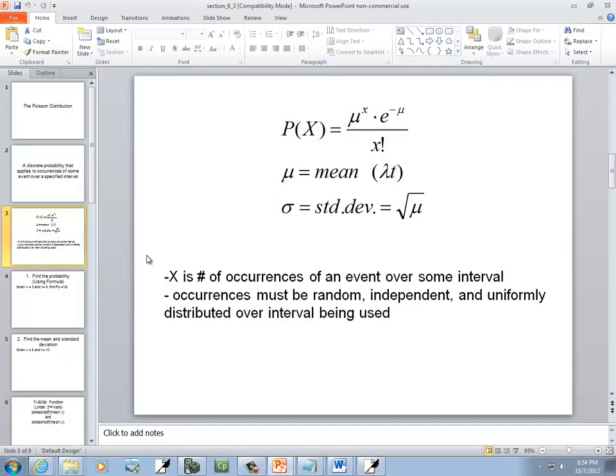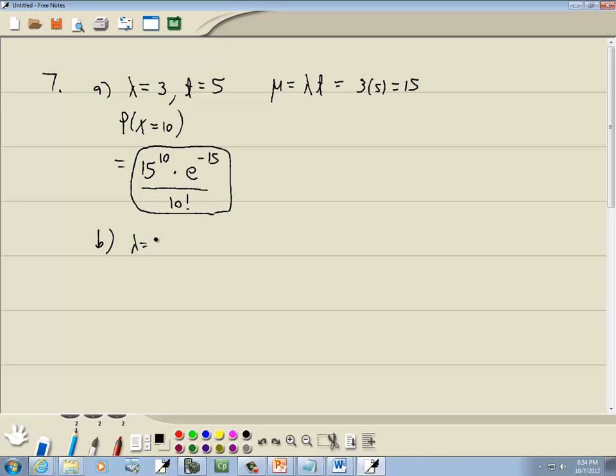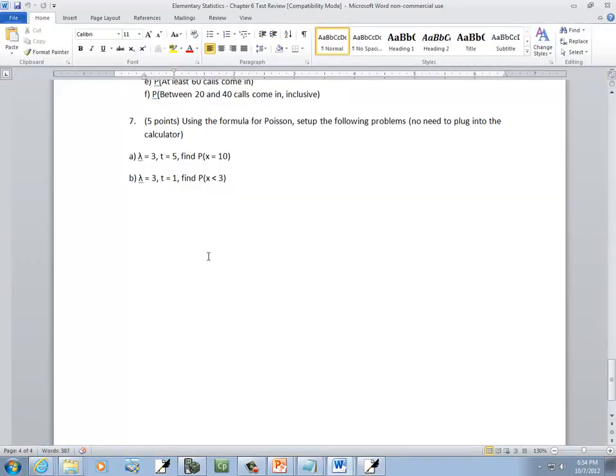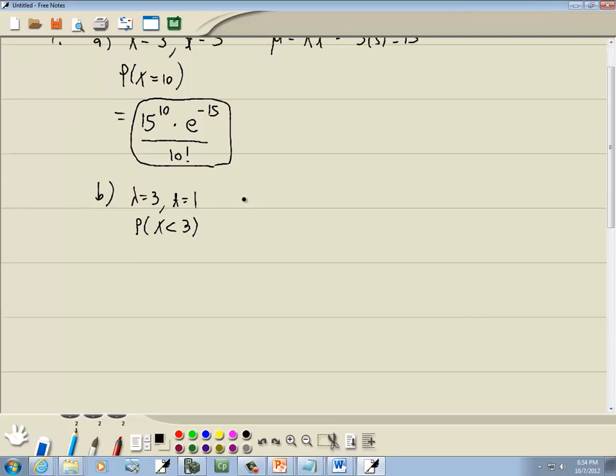And let's look at B. B says lambda is equal to 3, T is equal to 1, and we want to find the probability that X is less than 3. Okay, well we need mu. Mu is equal to lambda times T, which is 3 times 1, which gives us 3.